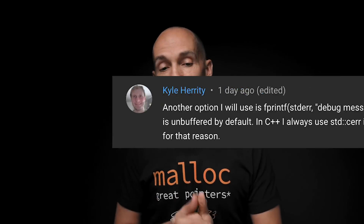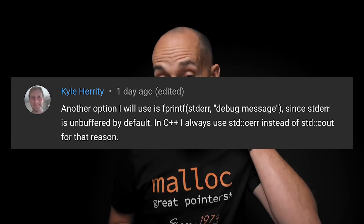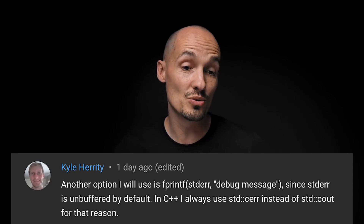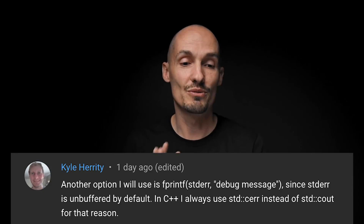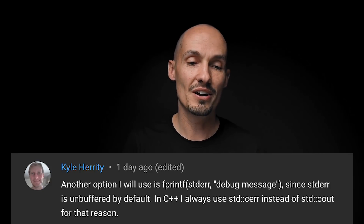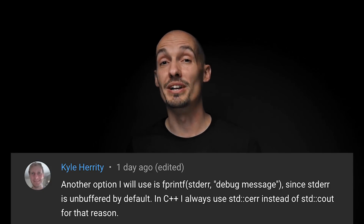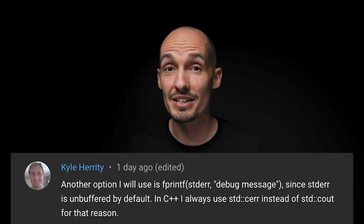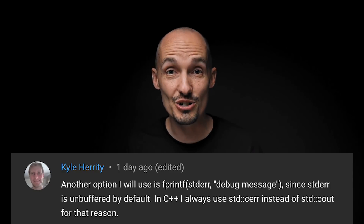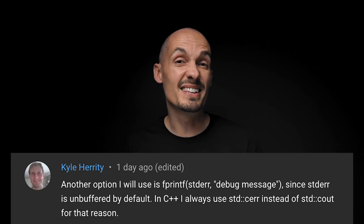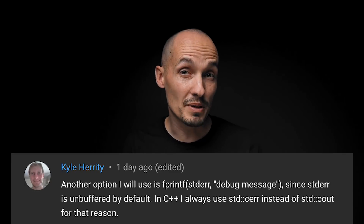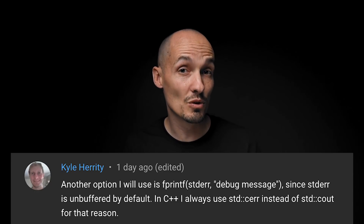Next, we have one from Kyle, and there are several like this, basically saying that you can use fprintf and write to standard error instead because it's not buffered. Now, this is true and it's a good point — it's a way to get around the standard out buffering issue. But keep in mind that this actually requires even more typing to debug, and we still need to remove our debug statements.